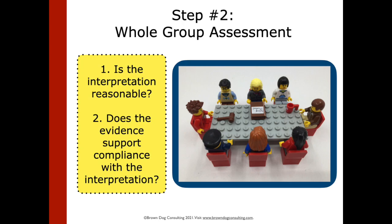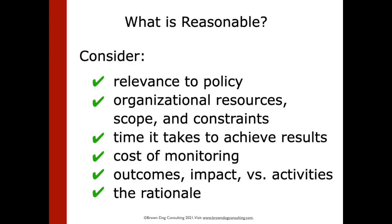If discussion veers away from these two questions, the board chair, or any board member for that matter, might need to remind the group that the board's criteria for judging the report is reasonableness of the interpretation and adequacy of the evidence. Many different factors can be considered when judging whether or not an interpretation is reasonable, including resources, opportunities, and the constraints within which the organization operates.